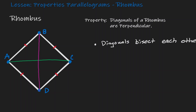Therefore, if diagonals bisect each other, let's annotate the intersection point and call it F. Then we know that AF is going to be congruent to FC, and BF is going to be congruent to FD.